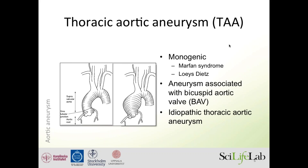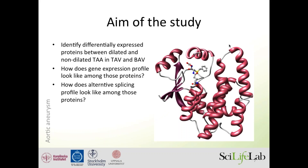There are some monogenic forms of this disease, but I will focus on the aneurysm associated with bicuspid aortic valve and tricuspid aortic valve. The aim of the study is to identify differentially expressed proteins between dilated and non-dilated aortas in persons with a tricuspid valve versus those with a bicuspid valve. We know from earlier that people with bicuspid valves — only two cusps — are more prone to dilatation of the aorta.